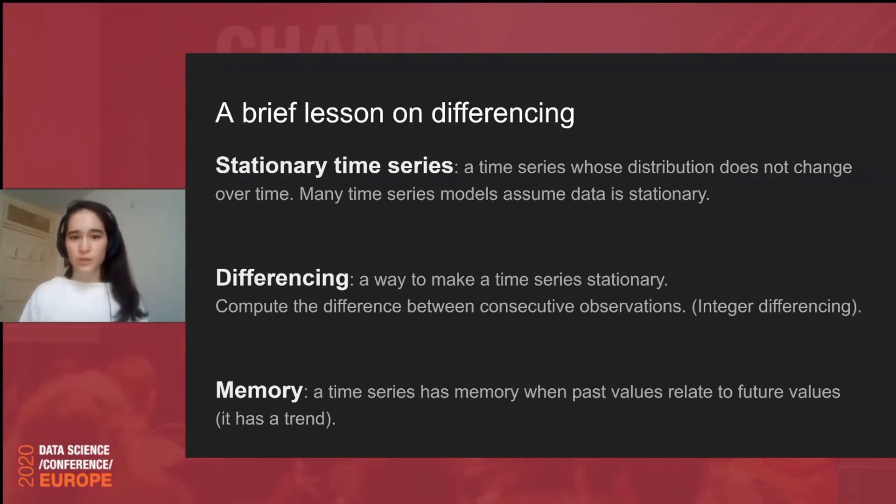So, we need to talk about what a stationary time series is. A stationary time series is one whose distribution does not change over time. So, its mean and variance are the same regardless of the point in time that you're considering. And many time series models, they assume that data is stationary. And this is because time series assume that the underlying generation data process remains constant throughout time.